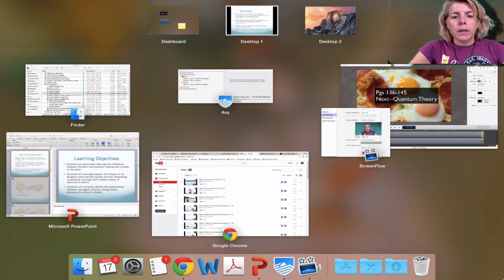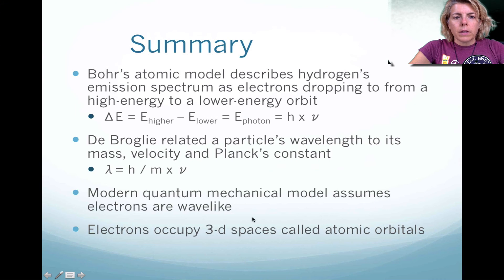So in summary, Bohr found that the atomic model he created worked really well for hydrogen, and he noticed that the emission that they viewed through the spectra was due to the electron going from a high energy to a low energy orbit. And we can use the calculation ΔE = E_higher - E_lower = E_photon = h × ν to represent that energy difference.